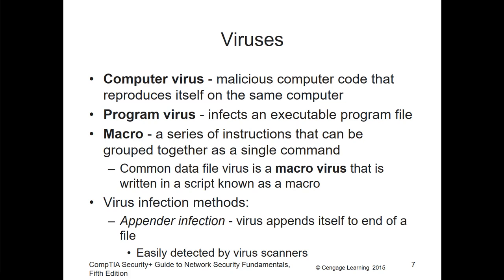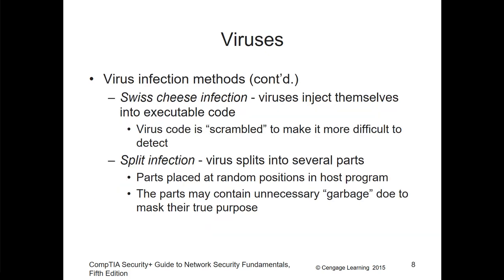Virus infection methods include append infection — the virus appends itself to the end of a file so that when you run the file, it executes the virus. This is easily mitigated because it's easily found by virus scanners. Another method is Swiss cheese infection, where the virus injects itself into an executable and the virus code is scrambled to make it harder to detect, similar to a rootkit.